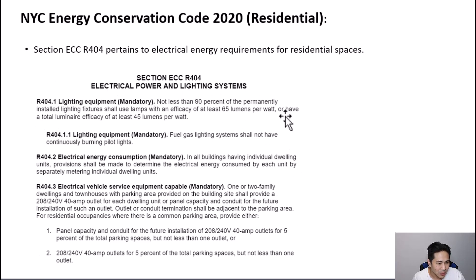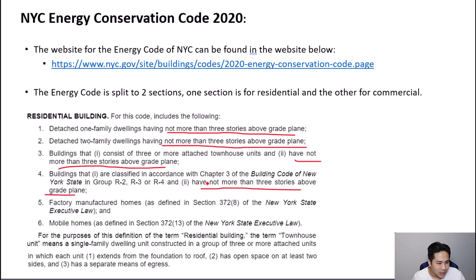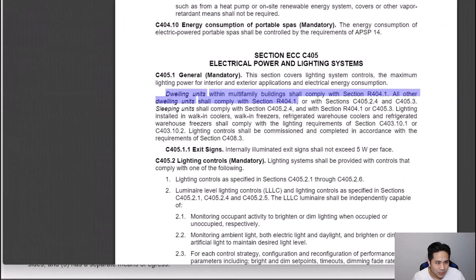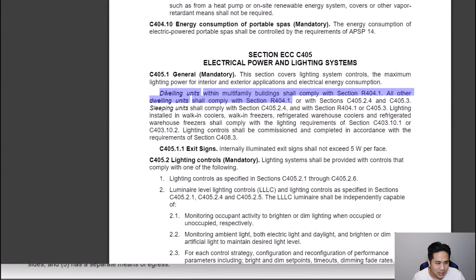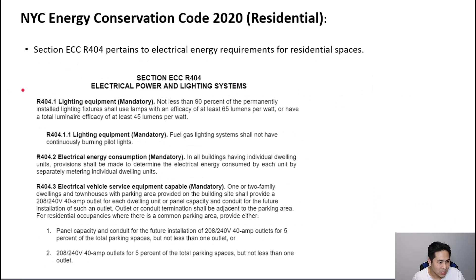The residential section R404.1 simply requires that lighting meets the efficacy requirements. The residential definition requires buildings to be not more than three stories above grade. However, the commercial section states that dwelling units can comply with R404.1 regardless of the number of floors. In summary, all dwelling units can follow section R404.1.